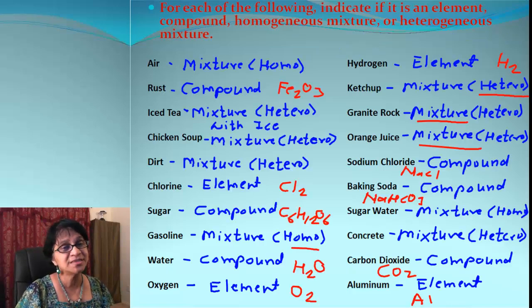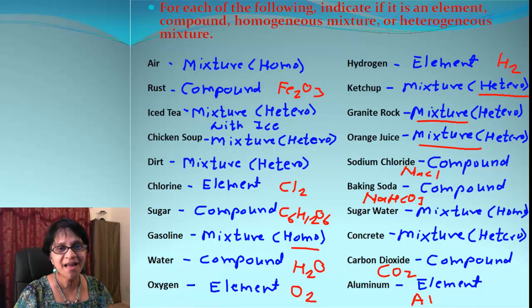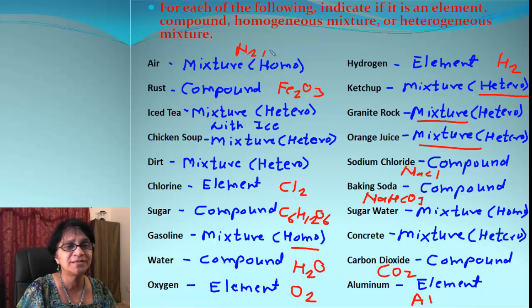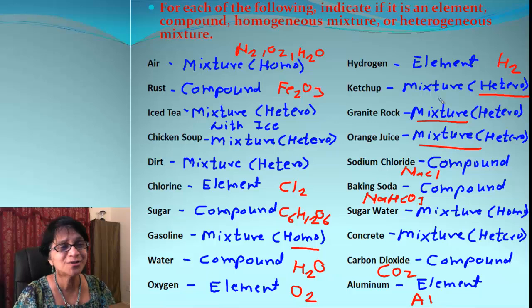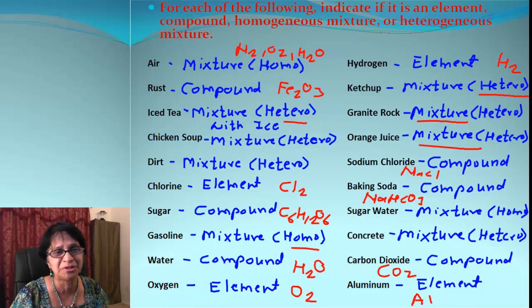On this slide here, I have the answers ready for our previous slides, but let's find out why we got those answers. Air is mixture. Air contains nitrogen, oxygen, and of course water vapor, and to some extent some other gases also, but it's a homogeneous mixture. Rust has a formula Fe2O3, more than one element, so it's a compound. Iced tea has ice floating in the tea, so with that it will be heterogeneous mixture. Chicken soup, of course, heterogeneous mixture. Dirt is heterogeneous because there are a lot of different types of dirt mixed in.